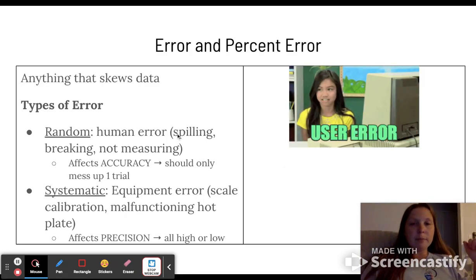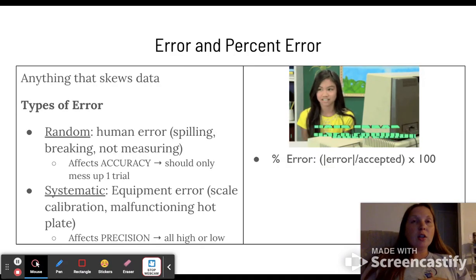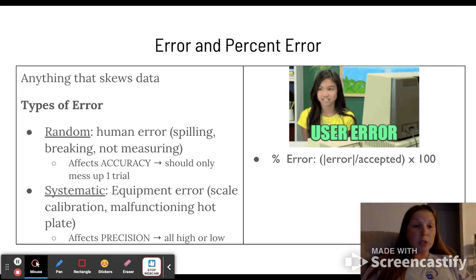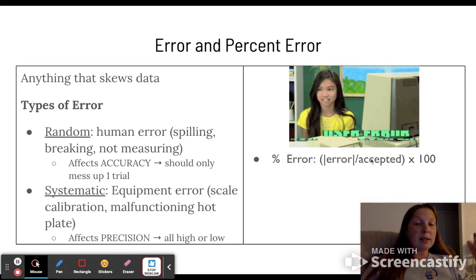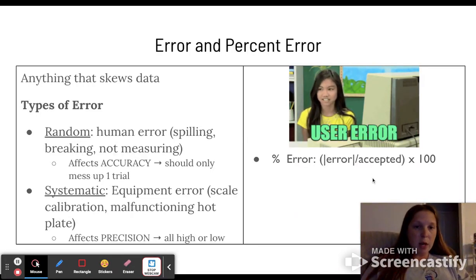And there's just a cute little meme or gif. So now we can look at error and determine the percent error of a lab, which is what we want to calculate. Percent error is calculated by error over your accepted value. This is the one that's given to you. This is a reference point times 100.